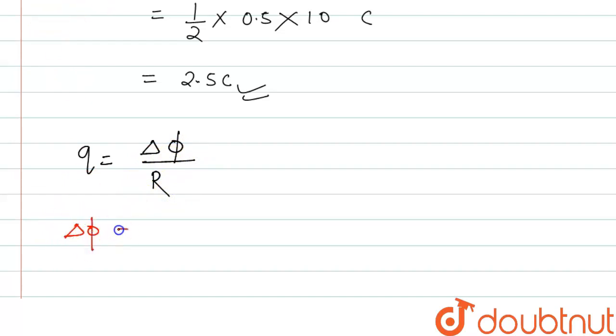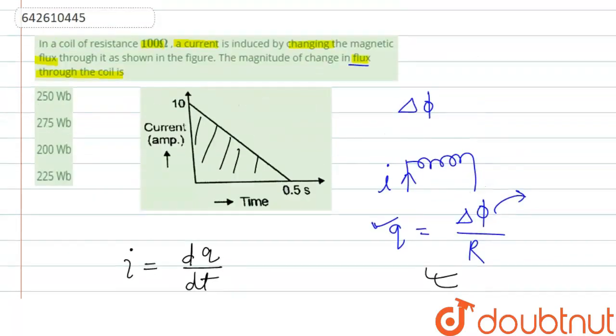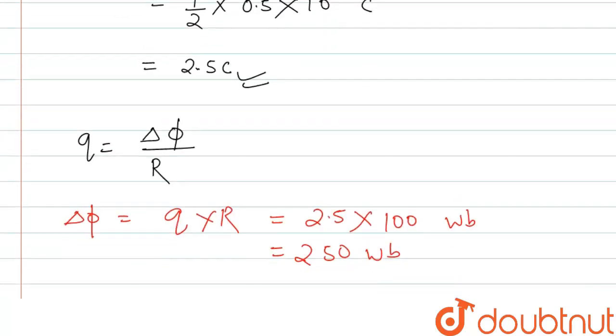And q we just found out, and that is 2.5, and the resistance is given 100 ohm, and this will be in weber. So this will be 250 weber. So if we check the options, the correct option is 250 weber. Correct answer is 250 weber.